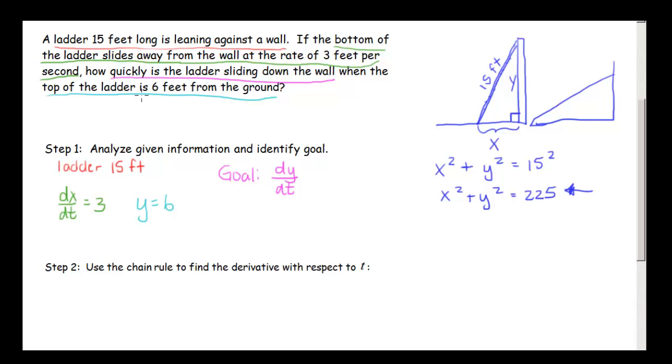Pause the video and see if you can figure this out and write down the given information and the goal. You're back. So this first sentence says the ladder is 15 feet long leaning against the wall. We don't actually use that in terms of any of our variables here because we have it in our formula for relating our x and our y. Next it says the bottom of the ladder is sliding away from the wall at a rate of 3 feet per second. So that's how this x side is changing. So that's our dx dt.